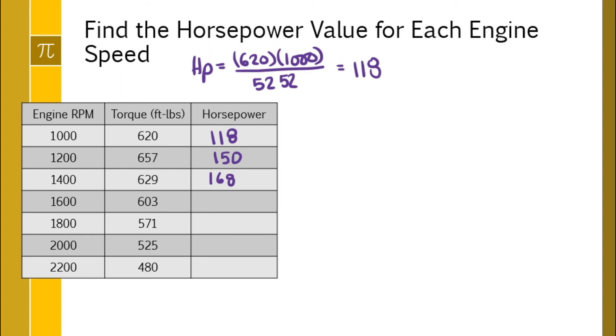At 1400 RPM, it's 168, and I'm just using that formula each time. At 1600 RPM, 184. 1800 RPM, 196, still going up. At 2000 RPM, we are going to get 200. And at 2200 RPM, we get 201.